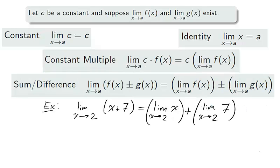If the limits of both f and g exist, then the sum and difference law says that functions can be summed before or after the limit is taken. Since we know the limits of x and 7 exist, x plus 7 approaches 9 as x approaches 2.